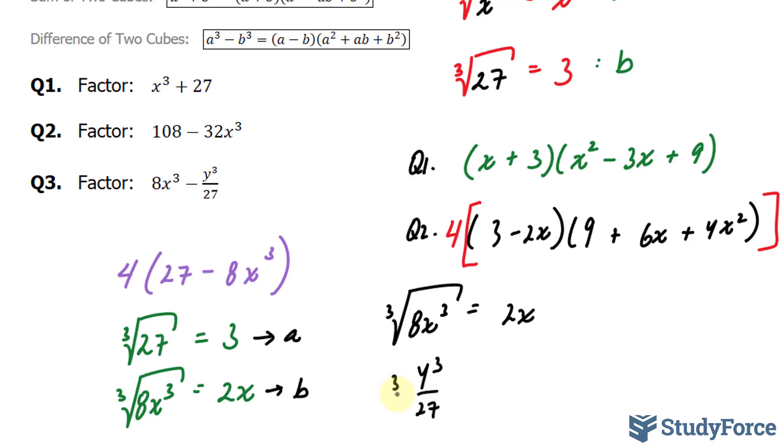How about y to the power of 3 over 27? I'm going to cube root this. This means that the term at the top and the term at the bottom also become cube rooted. Cube rooting y to the power of 3 gives us y, and cube rooting 27 gives us 3. So this expression passes the test.